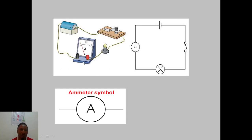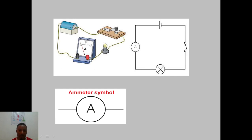Here is an ammeter — this is how the instrument looks. Notice that the negative side is connected to the black side of the ammeter, while the positive side of the battery is connected to the red side. This kind of connection is what we call a series connection. The ammeter is always connected in series in the circuit to measure the current flowing.